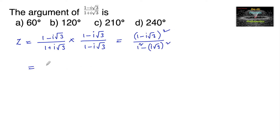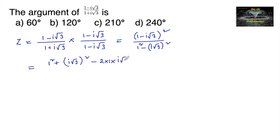Using the formula (a - b)² in the numerator, we expand to get 1² + (i√3)² - 2 × 1 × i√3. In the denominator, 1² = 1 and -i² = -(-1) = +1, so plus (√3)² = 3.